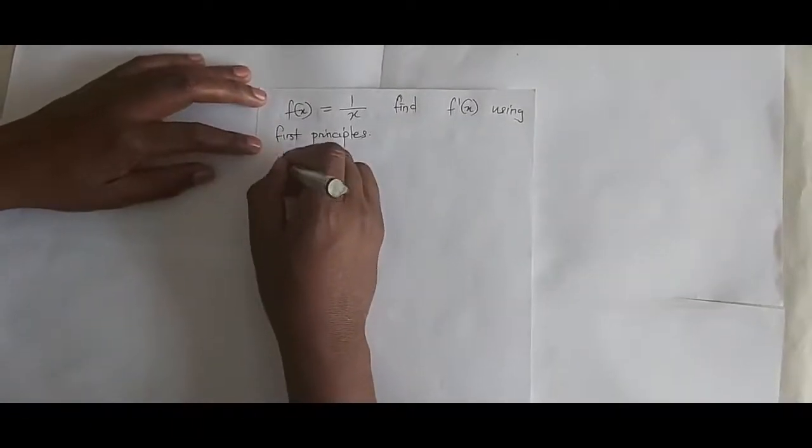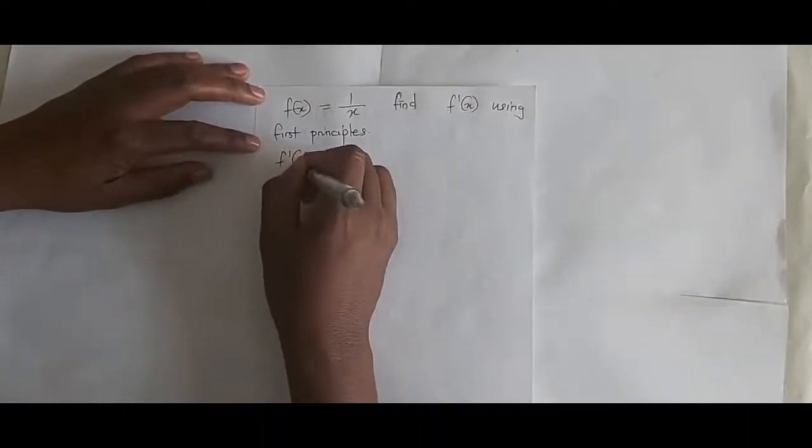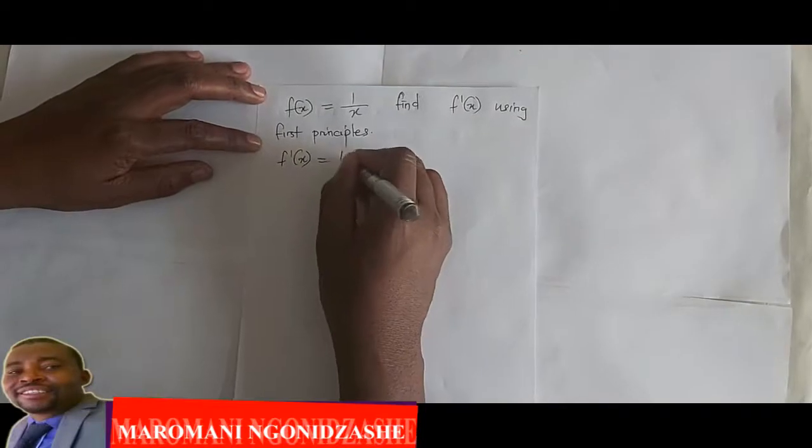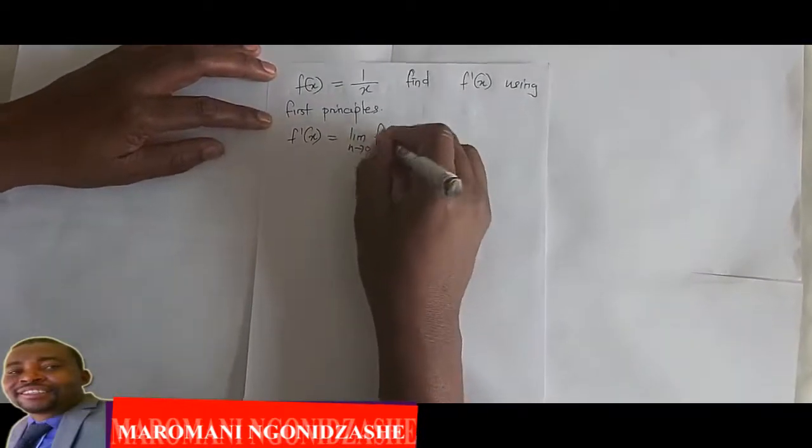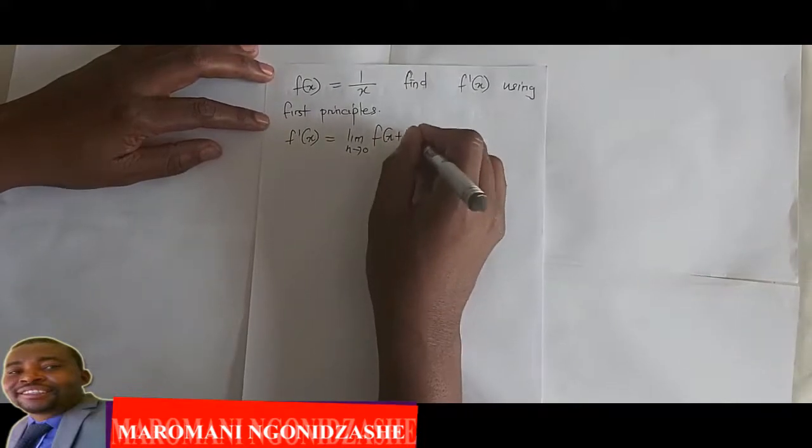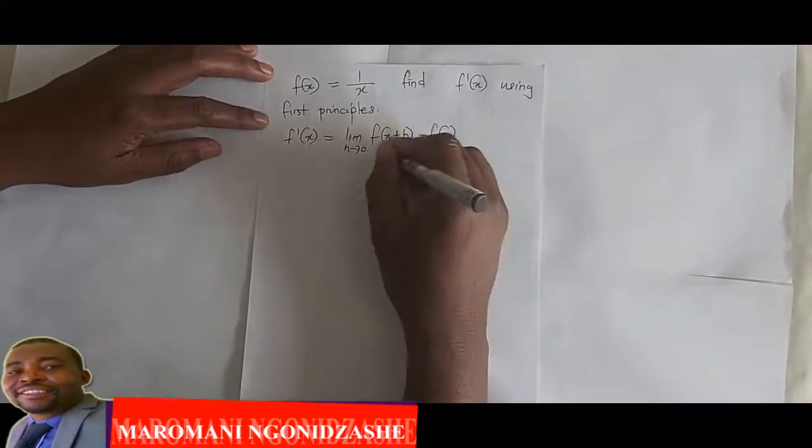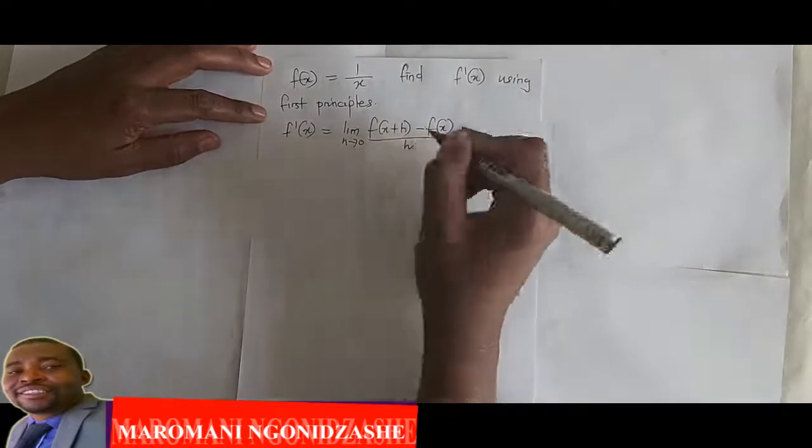This means that f dash of x equals the limit as h approaches 0 of f of x plus h minus f of x, everything over h.